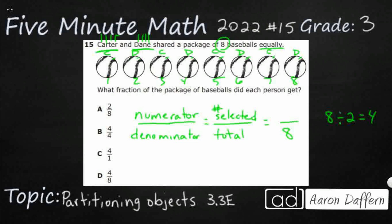But how do we represent that as a fraction? How can we represent each of these baseballs as a fraction? Well, how many baseballs is this right here? Obviously it's just one, but how many total baseballs are there? Eight — there's eight total. So each of these baseballs can equal one-eighth. And if you get all eight of them together then you've got the whole thing: eight out of eight, one whole.